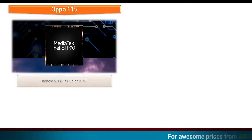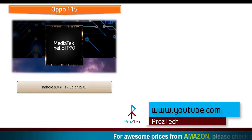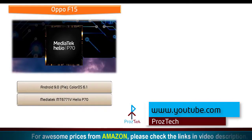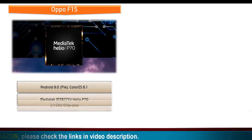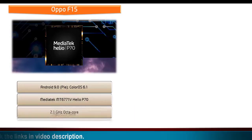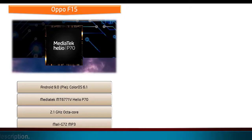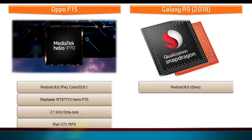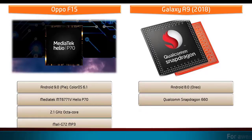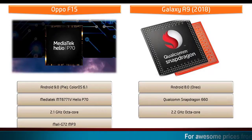Oppo F15 comes with Android 9.0 Pie, Colors OS 6.1, and is powered by MediaTek MT6771V Helio P70 processor with Octa-Core 2.1 GHz and GPU Mali-G72 MP3. Whereas Galaxy A9 2018 runs Android 8.1 Oreo and is powered by Qualcomm Snapdragon 660 processor with 2.2 GHz Octa-Core and Adreno 512.